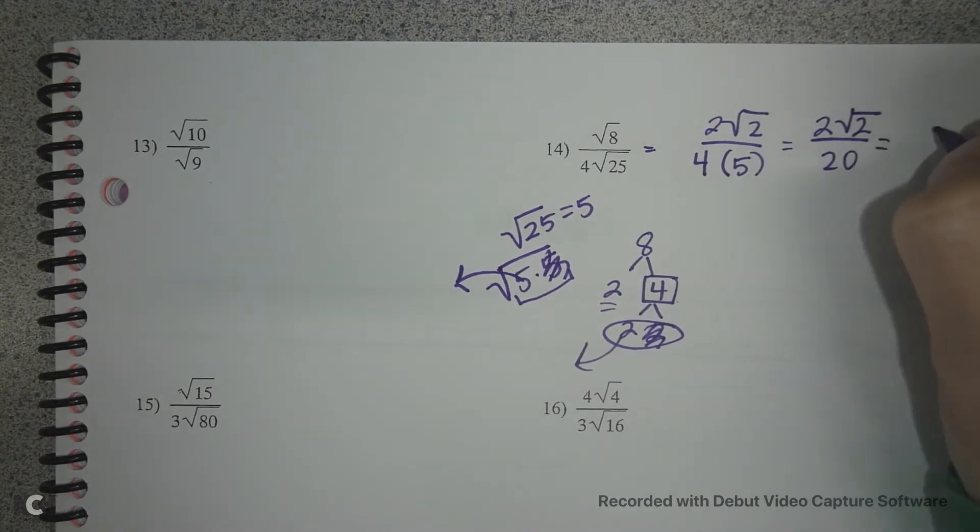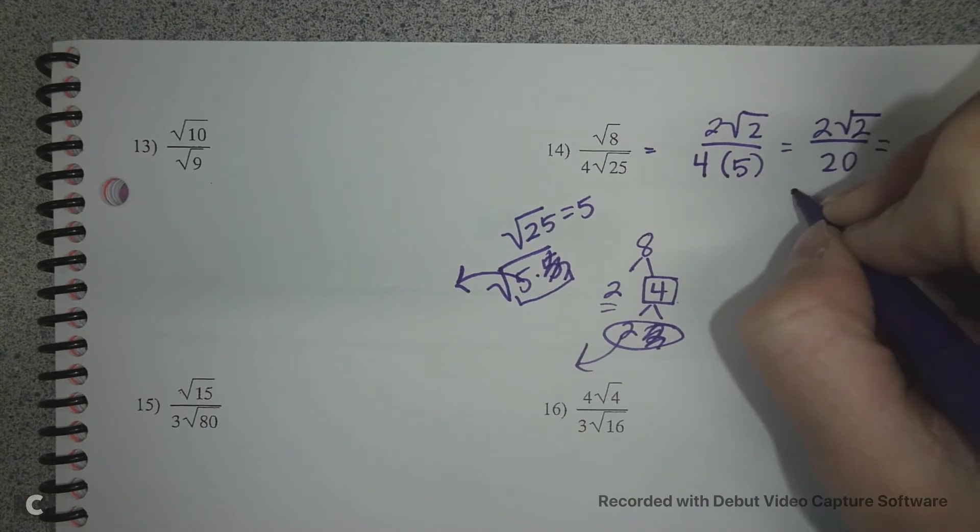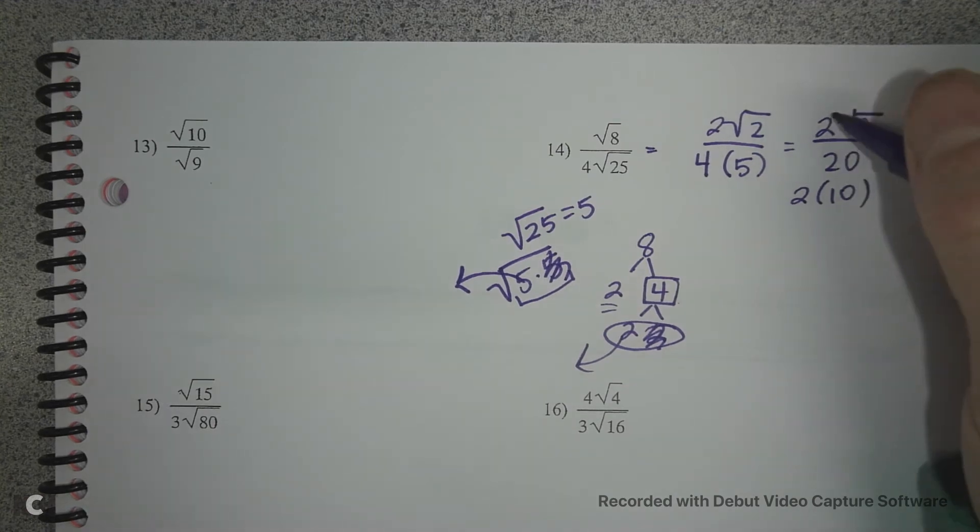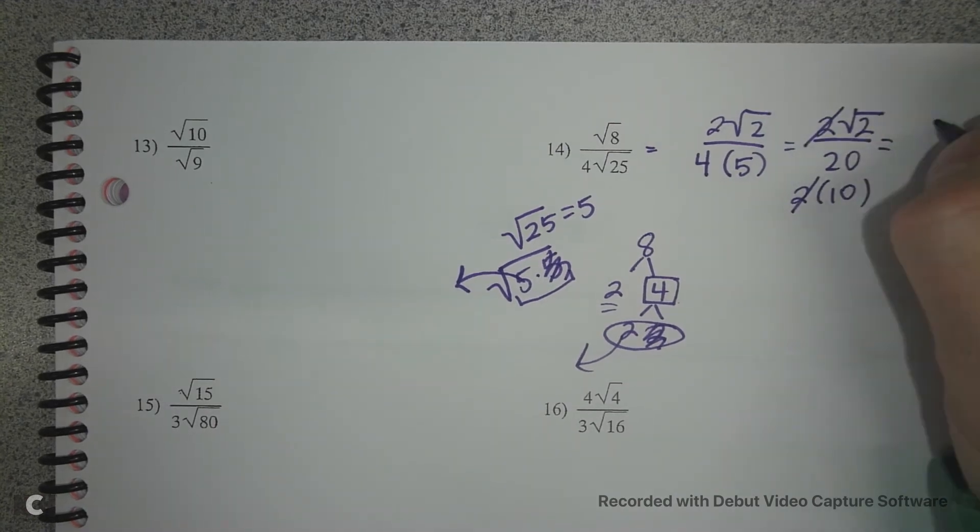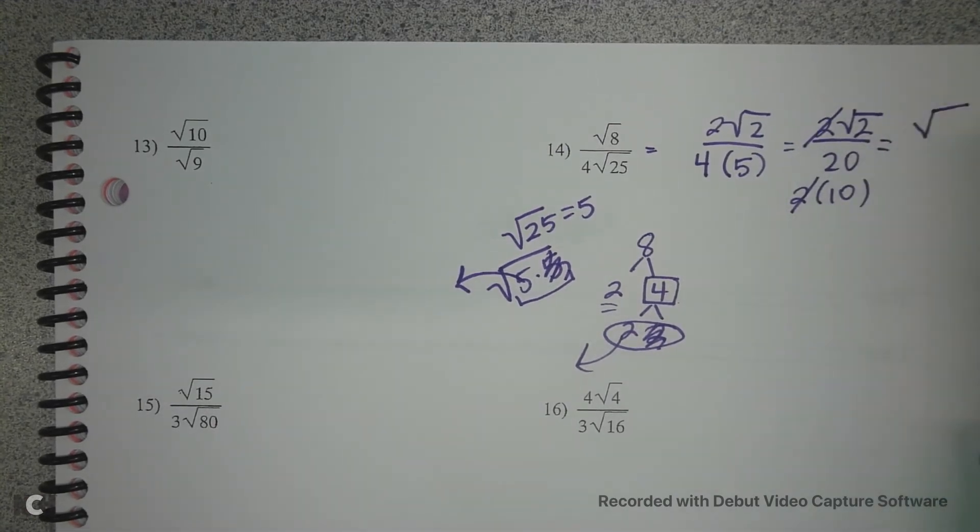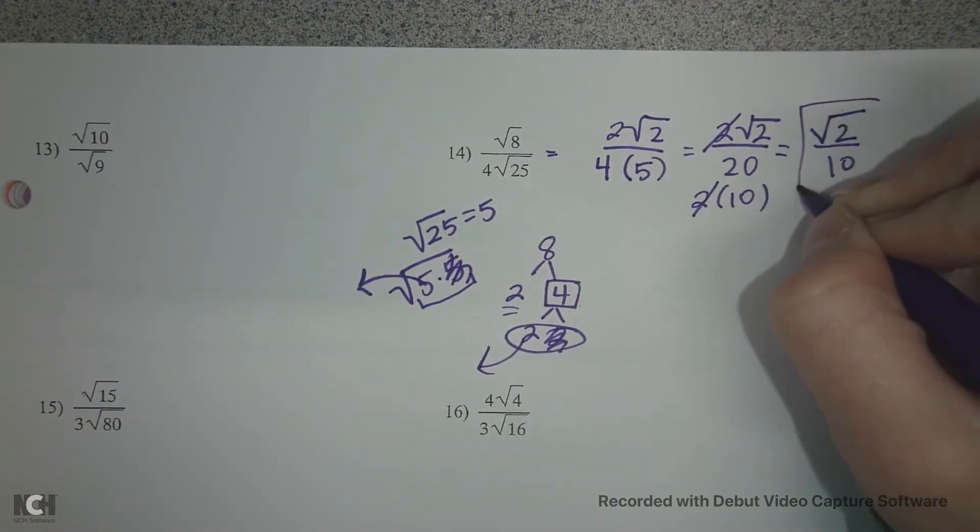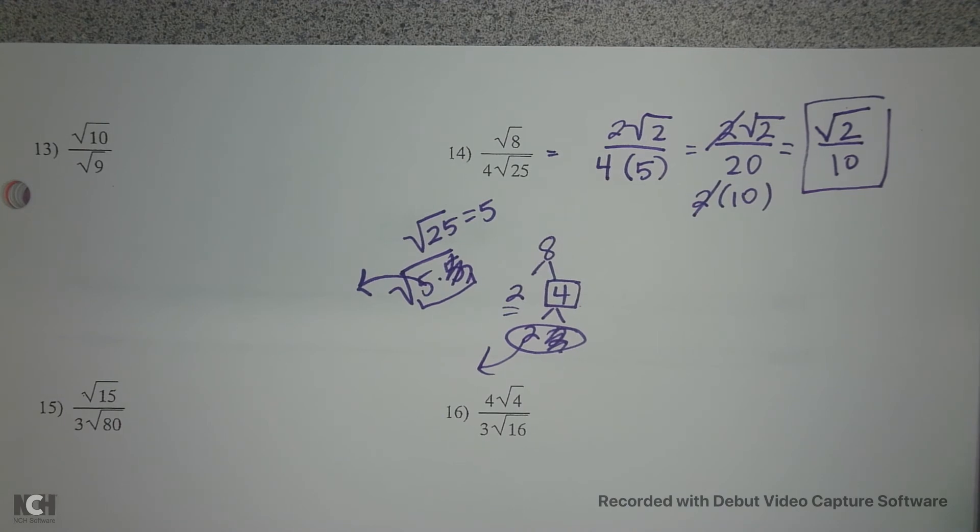I can reduce 20 and 2 though, because 20 is actually made up of 2 times 10, and then 2 is made up of 2. So I could cancel out my greatest common factors, and my final answer is root 2 over 10.